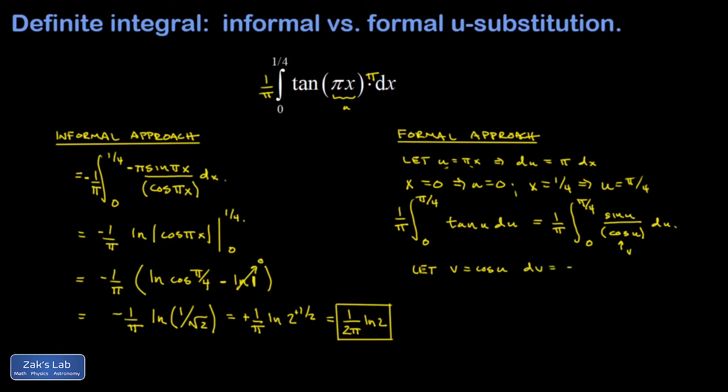And dv is going to be negative sine u du, taking the derivative there. And when u is zero, v is the cosine of zero, which is one. And when u is pi over four, v is the cosine of pi over four, which is one over root two.